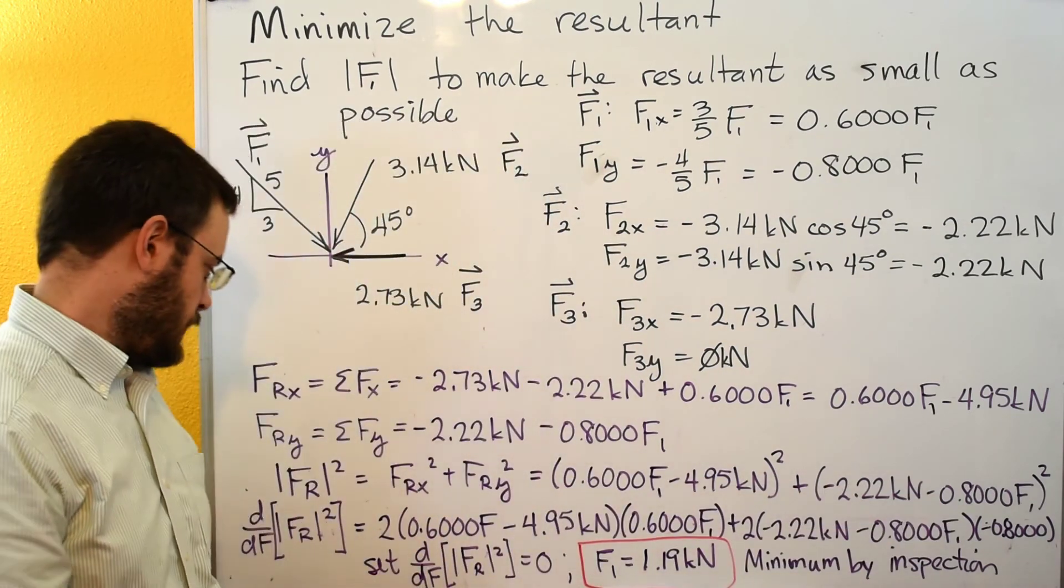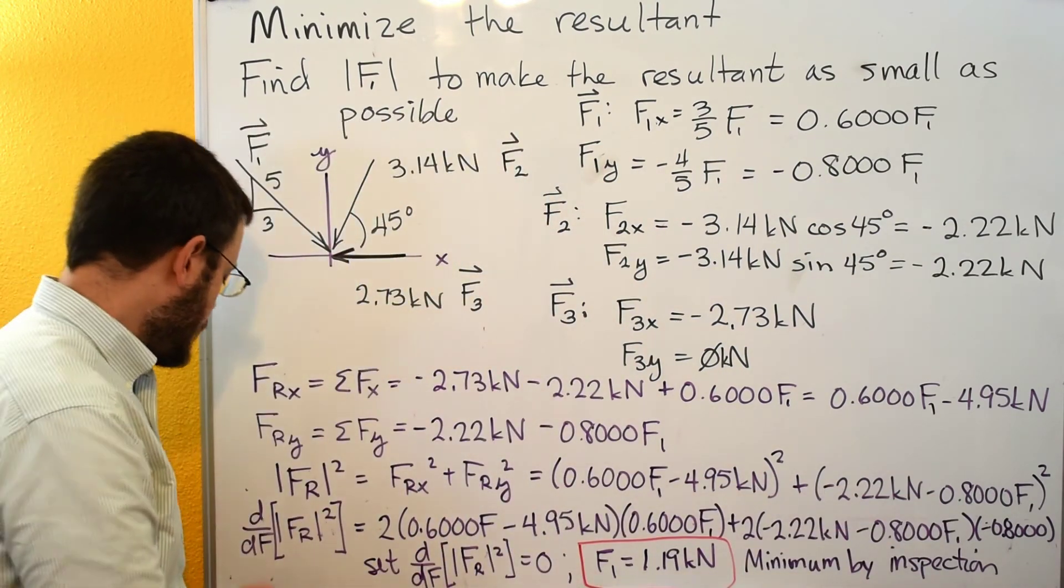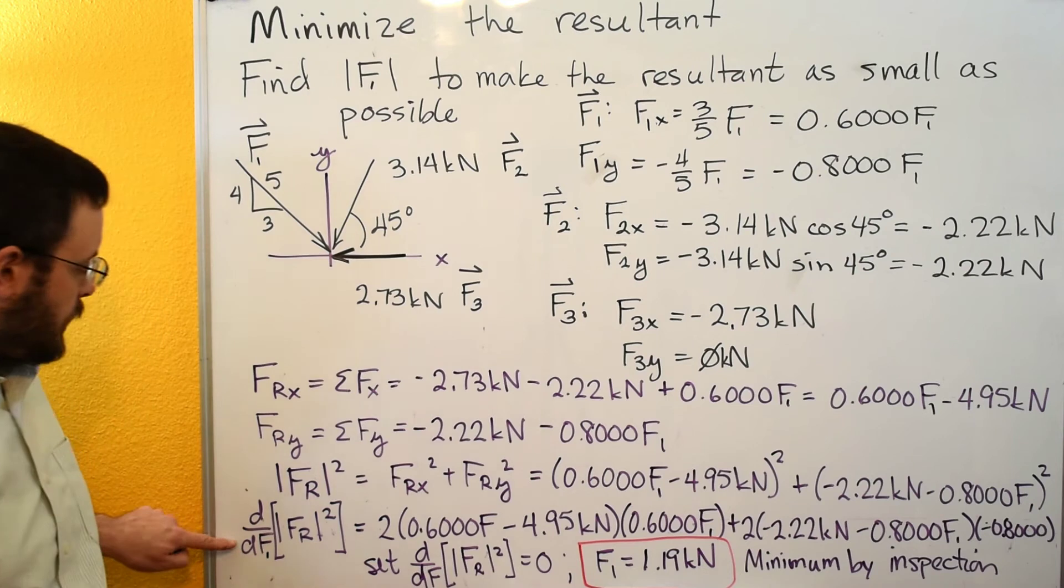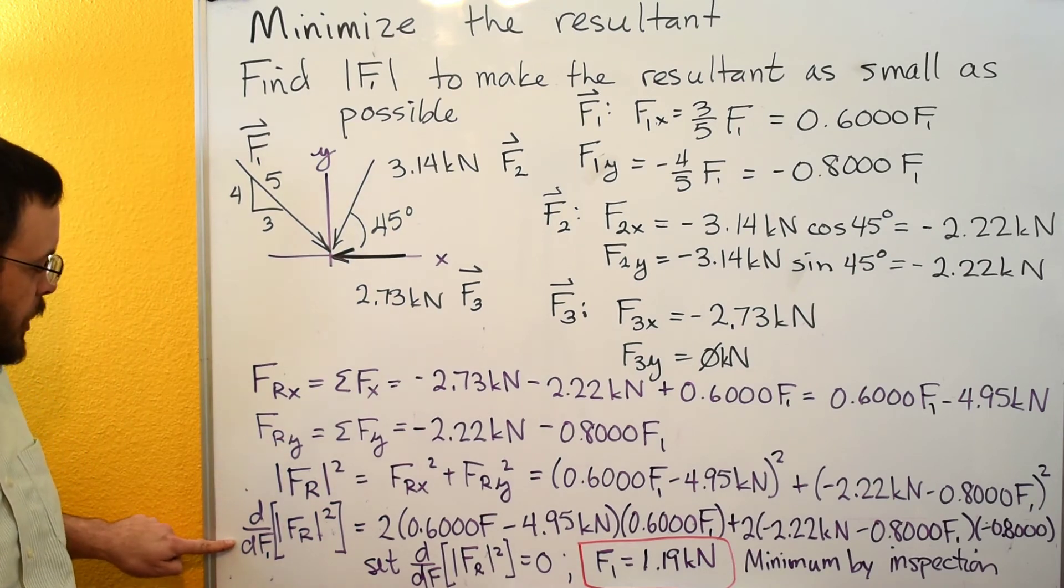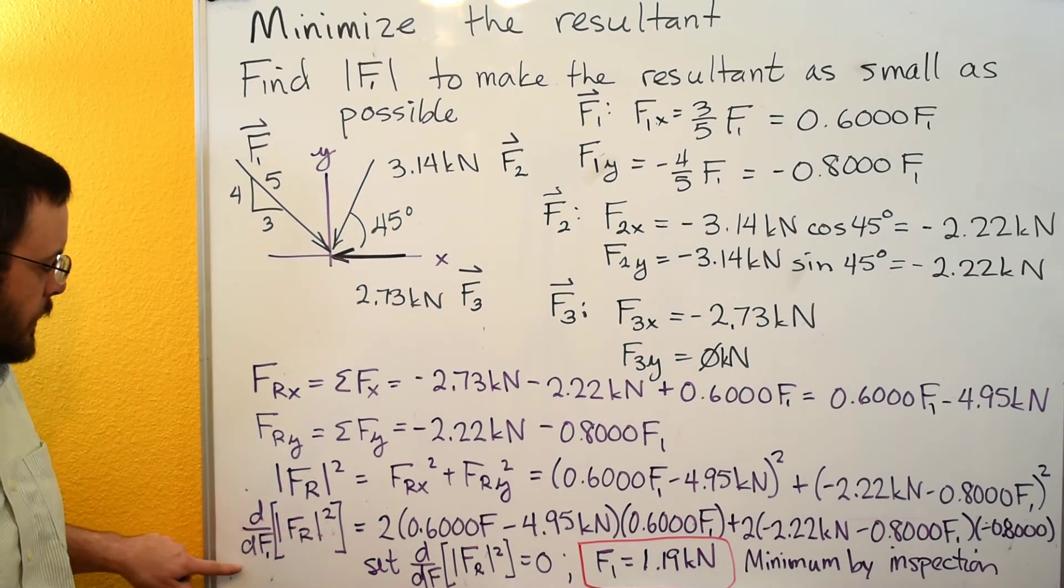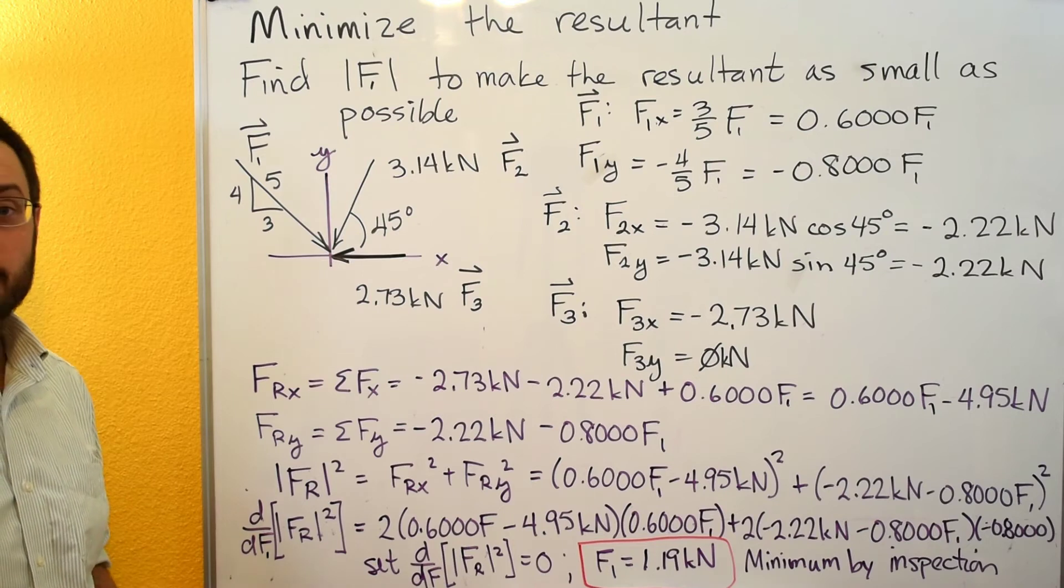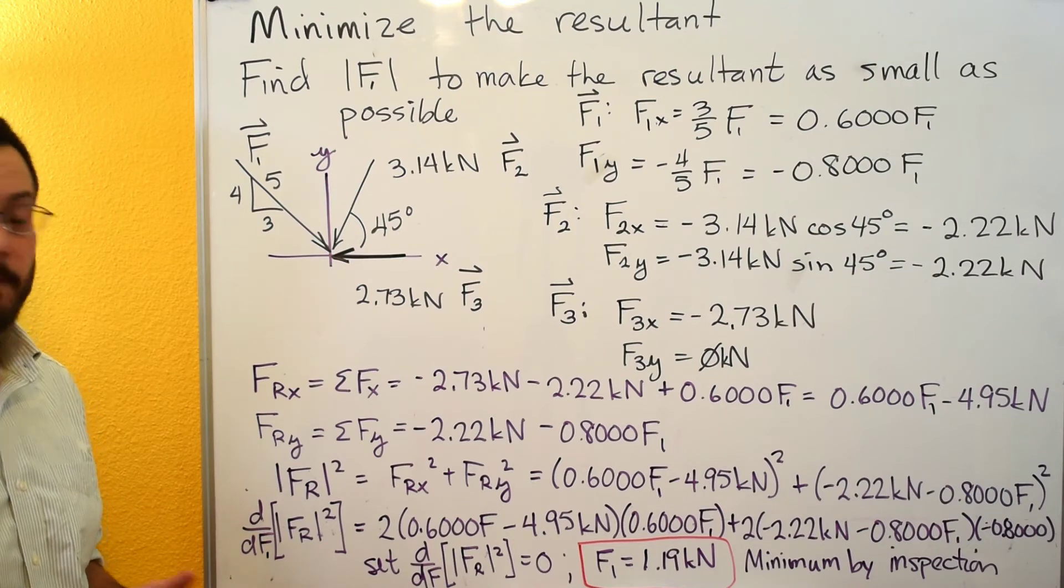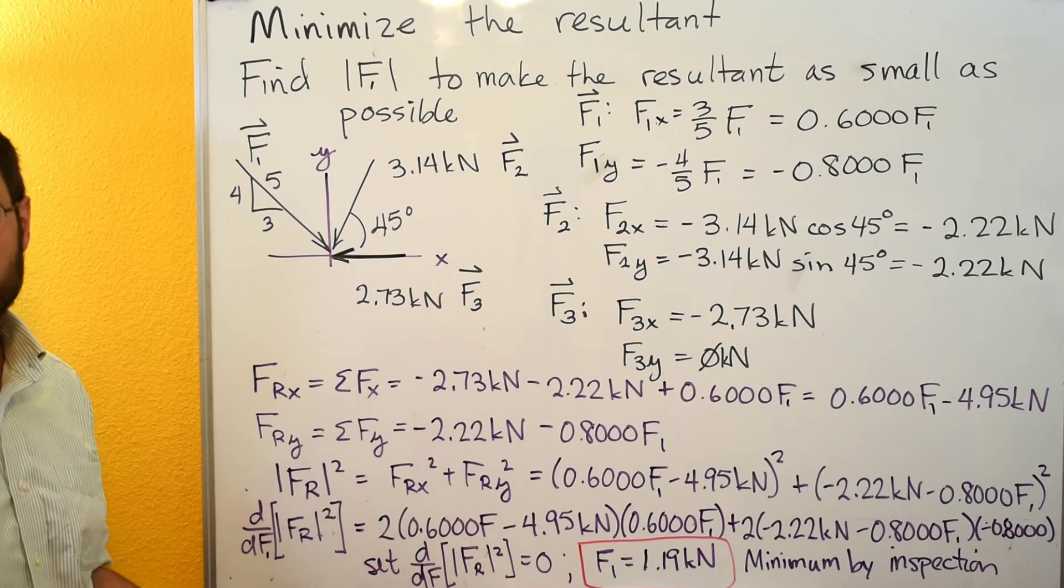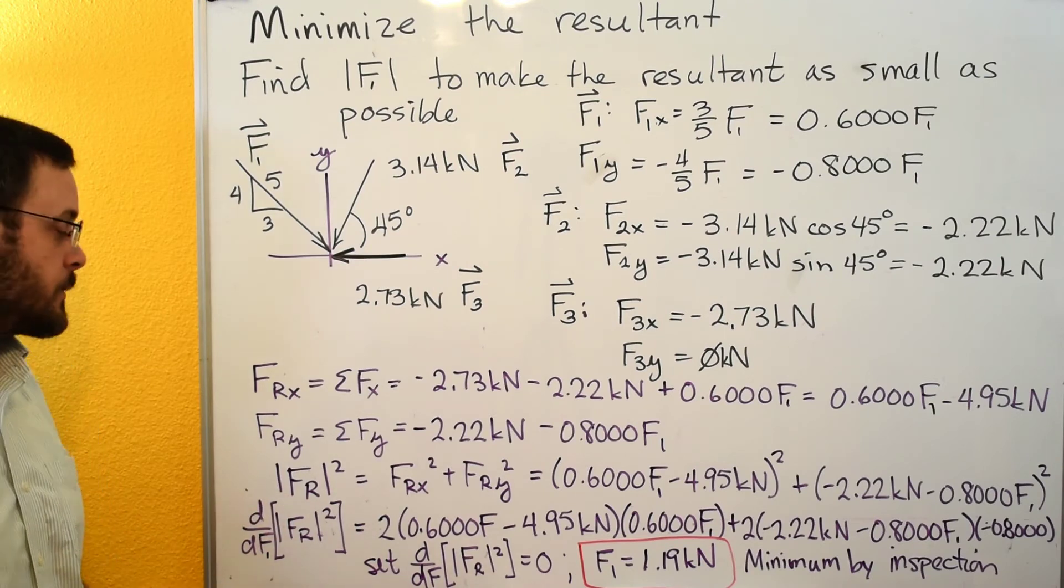Now we're going to take a derivative of this with respect to F1. So derivative of the magnitude squared with respect to F1. If we can maximize or minimize the magnitude, we will also maximize or minimize the square of the magnitude.